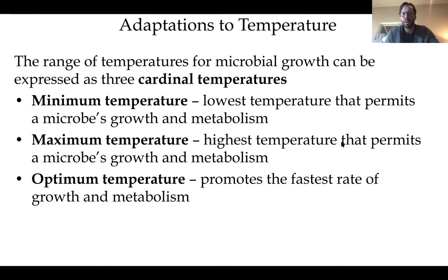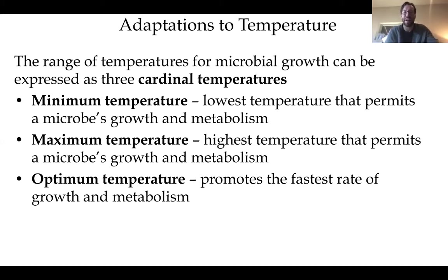The three cardinal temperatures are minimum temperature, maximum temperature, and optimum temperature. Minimum temperature is the lowest temperature at which a particular microbe can grow. Maximum temperature is the highest. Each microbe has its own set of these three cardinal temperatures — a range they can survive in, and a particular temperature at which they thrive.